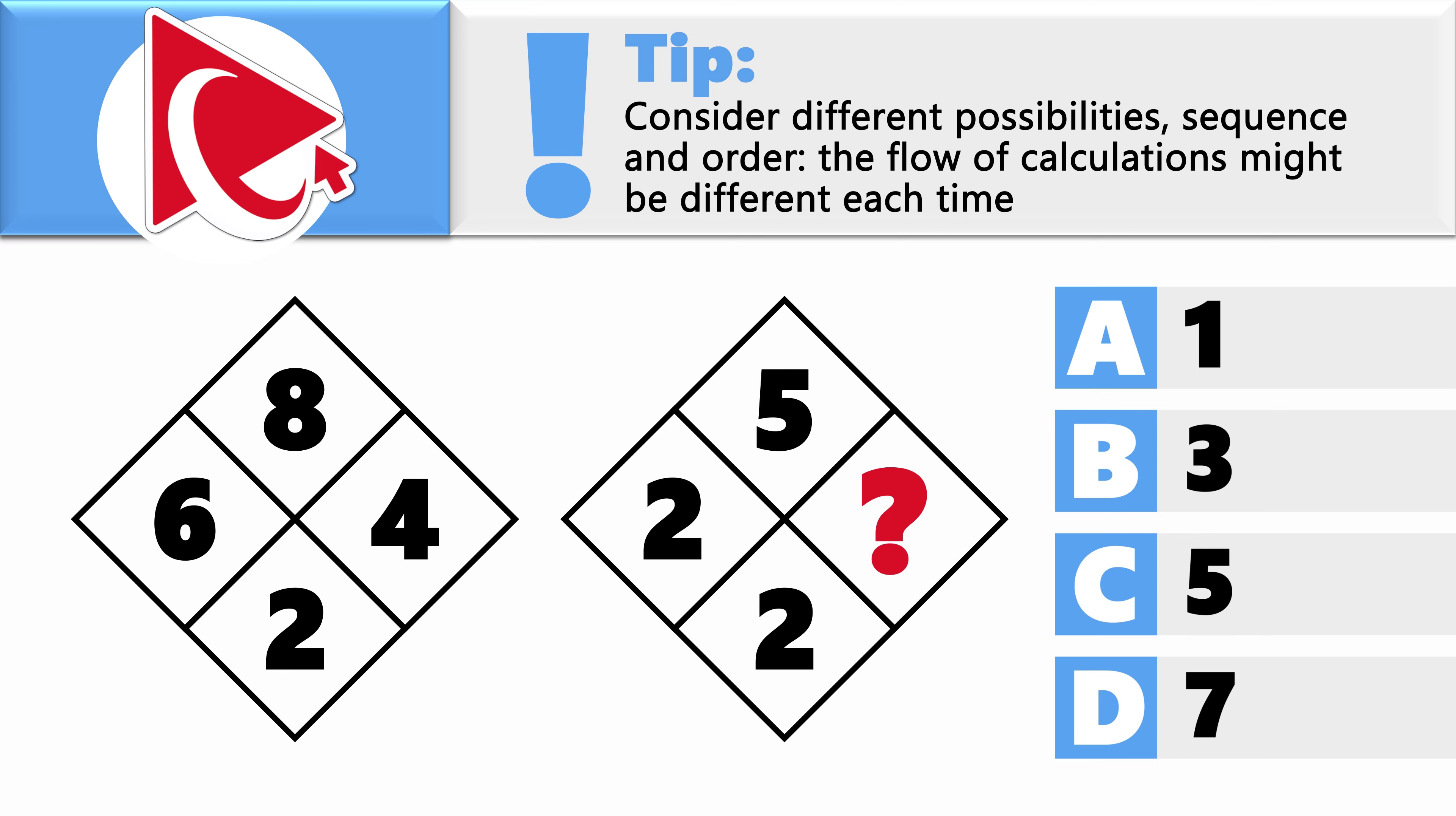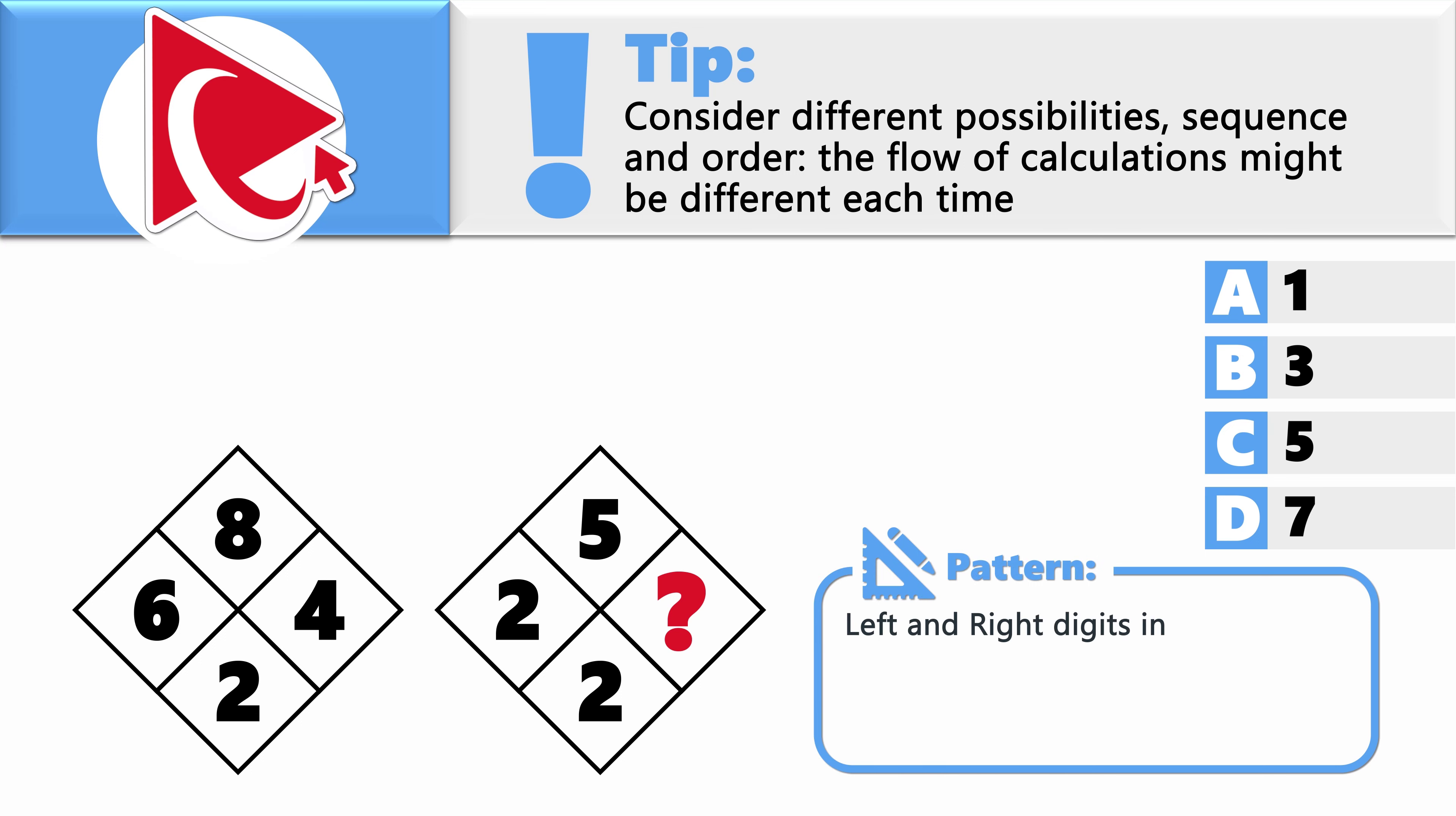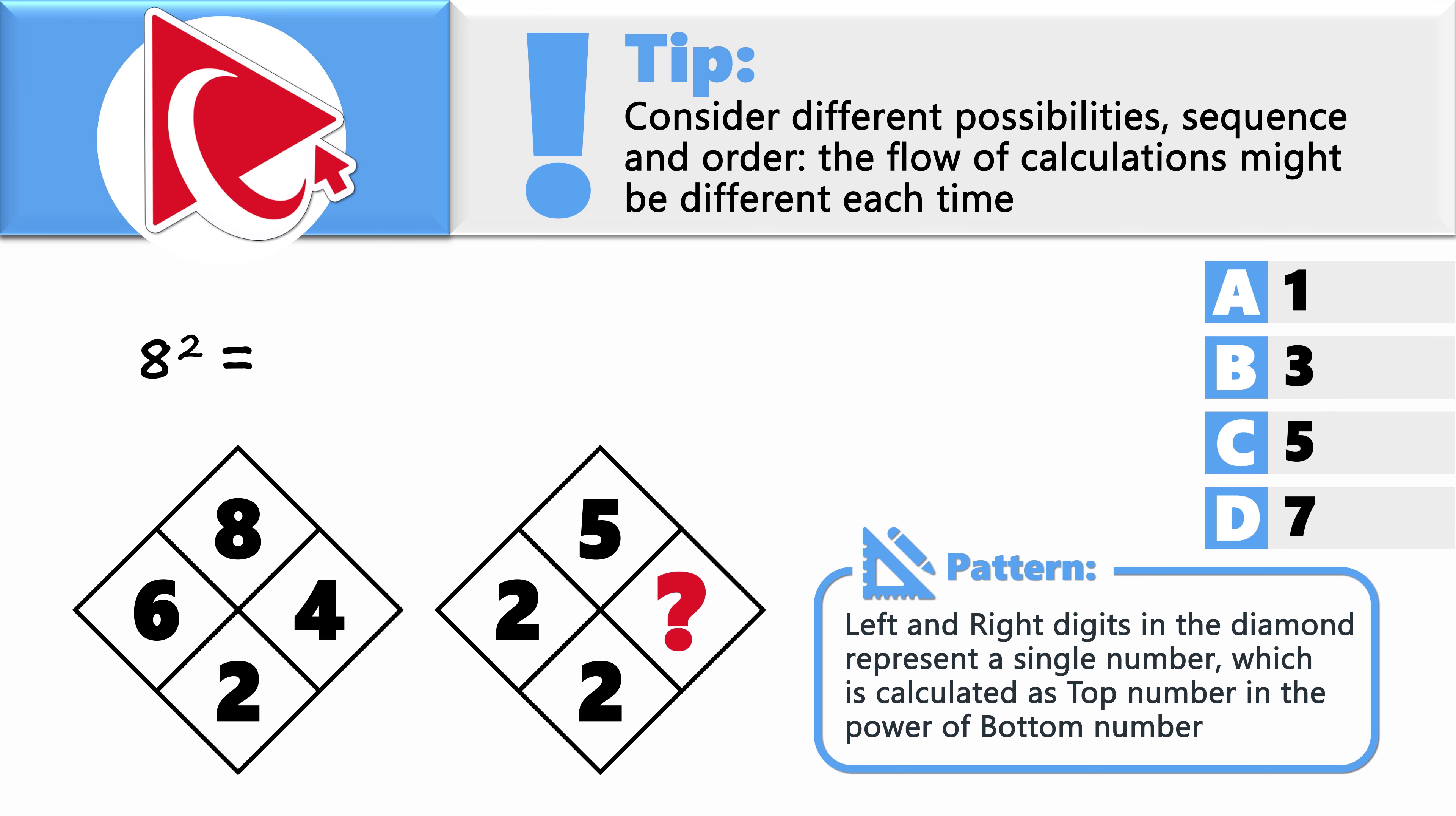Take a close look at the diamond that has all the numbers. The pattern here is that the left and right digits in the diamond represent a single number, which is calculated as a top number in the power of the bottom number. Let's look at the example. For example, the top number in the left diamond is 8, and the bottom number is 2. 8 in the power of 2 is 64.